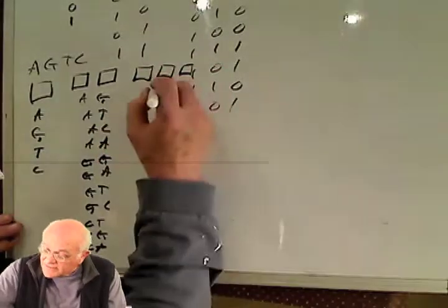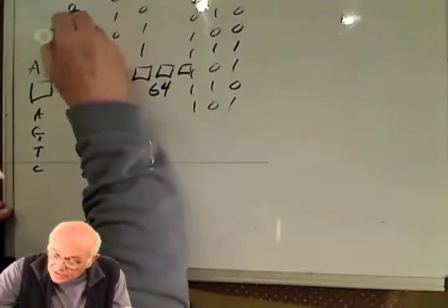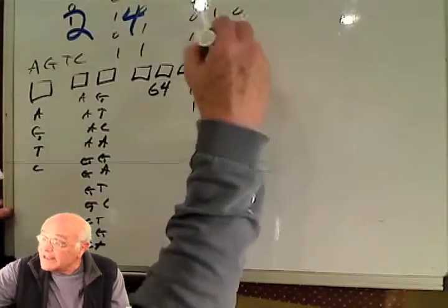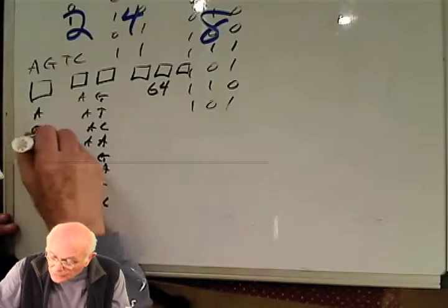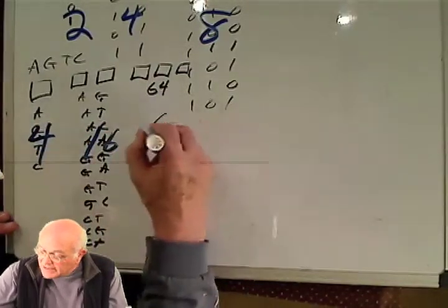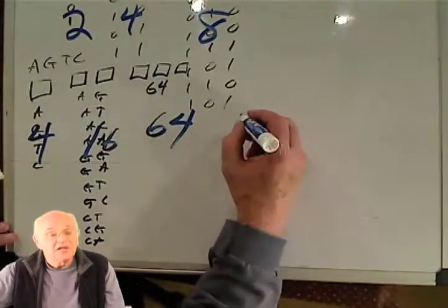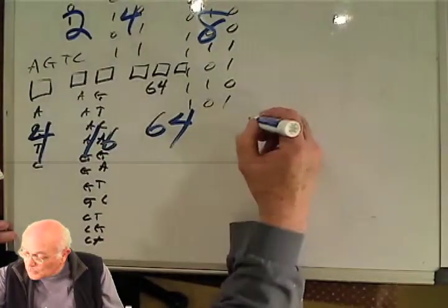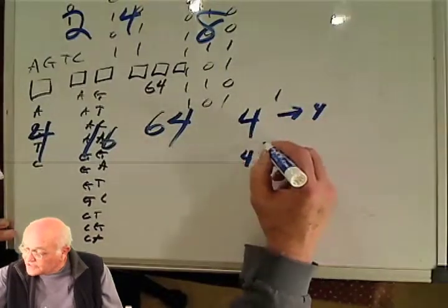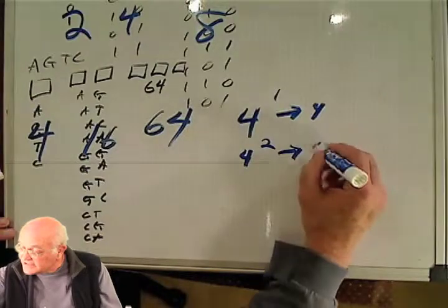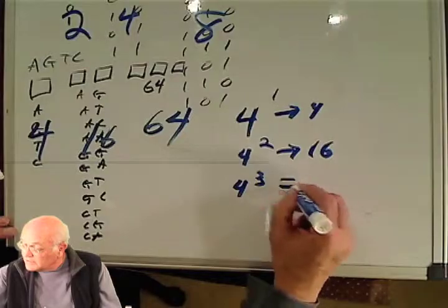And if there are three digits for the genetic code, there are 64. So for the binary code we have 2, 4, and 8. For the genetic code, much more powerful, we have 4, 16, and 64. The math is simple: 4 to the 1 is 4, 4 squared is 16, and 4 cubed is 64.